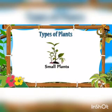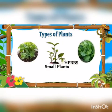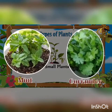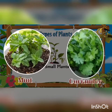Some plants are small and weak. Such plants are called herbs. Mint and coriander are examples of herbs.